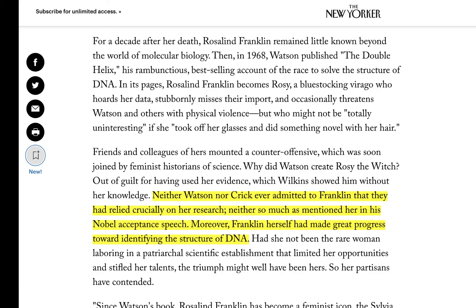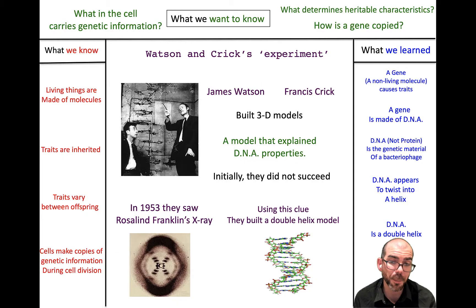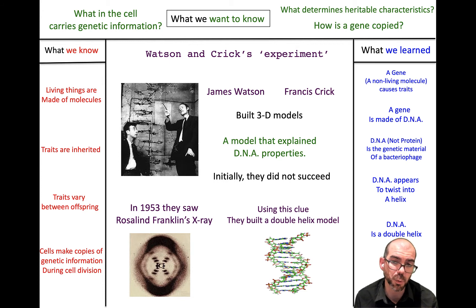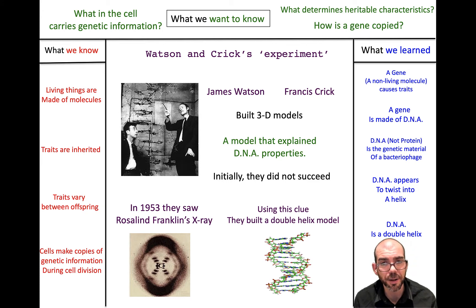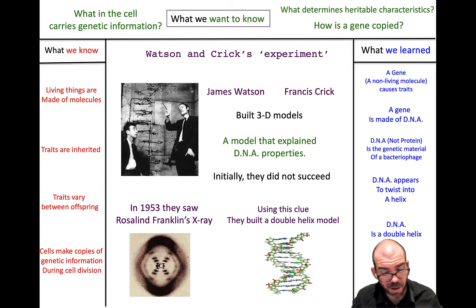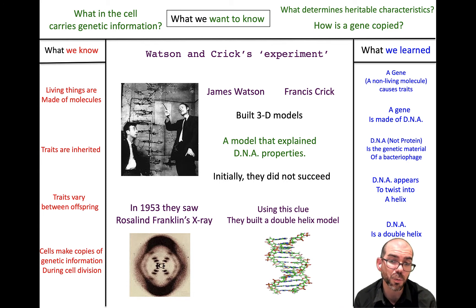Crick and Watson then published their work without mentioning they had seen Rosalind Franklin's x-ray. They went on to win Nobel Prizes and are largely credited with the discovery of DNA as a double helix. It wasn't until 20 to 30 plus years later that they admitted they had seen her work. Rosalind Franklin passed away shortly after, without receiving proper credit. Posthumously, she was awarded a Nobel, and history now tells the real story — a reminder that humans are humans, but it's important that individuals like Rosalind Franklin receive the credit they deserve.